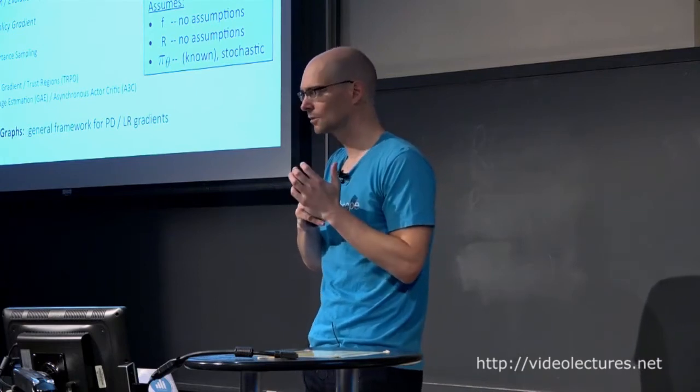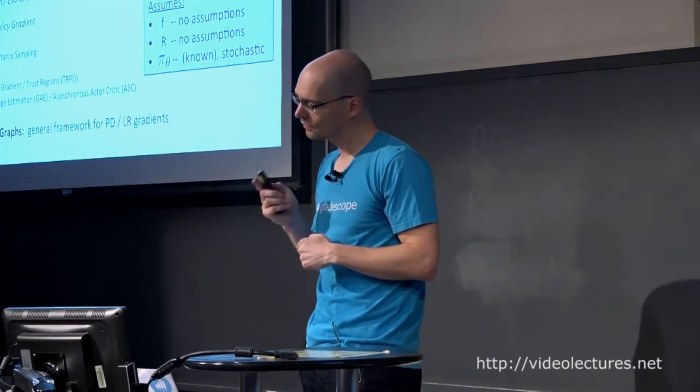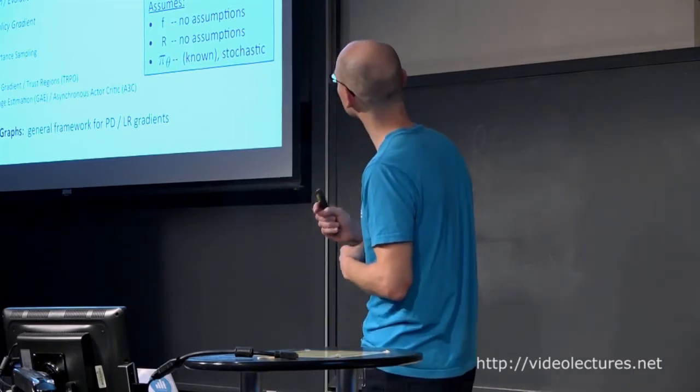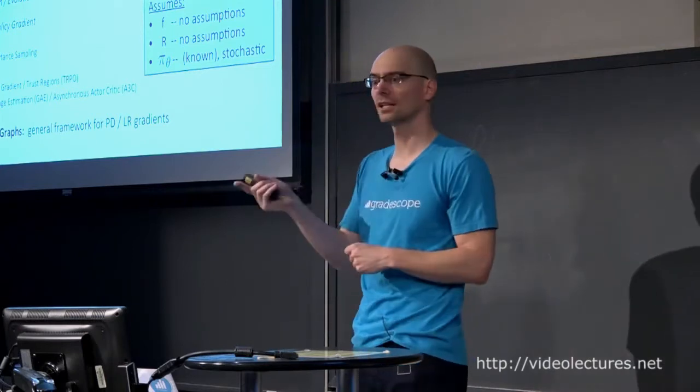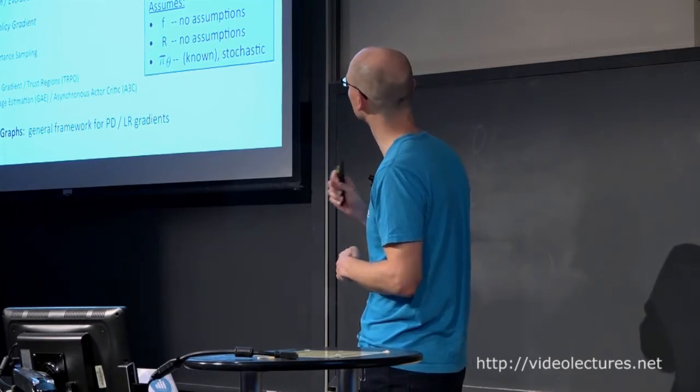Starting with model-based. We'll study three types of derivatives: path derivatives, derivative-free methods, and likelihood ratio gradients — three different ways of computing the derivative that tells you which direction to step to improve your policy. We'll start with some pretty strong assumptions: f is a dynamics model describing next state given current state and action, and for now we'll assume it's known and differentiable. We'll assume the reward function is known and differentiable. We'll assume the policy is known — which is not really an assumption since we design it ourselves — and that it's differentiable.